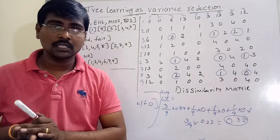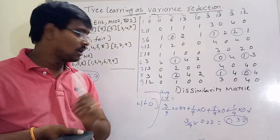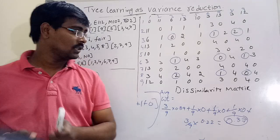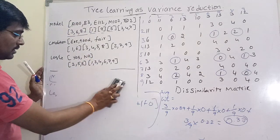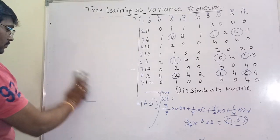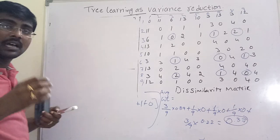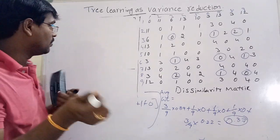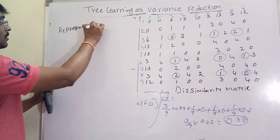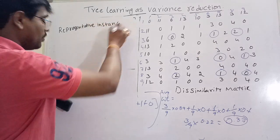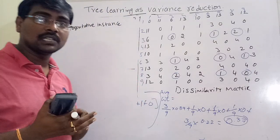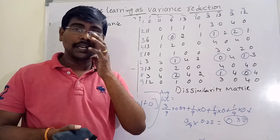One question is: how do we label the clusters once the cluster tree is constructed? The clusters are labeled by using a representative instance. What is a representative instance? It is the instance whose sum of squared distances to all other instances in the cluster is lowest.